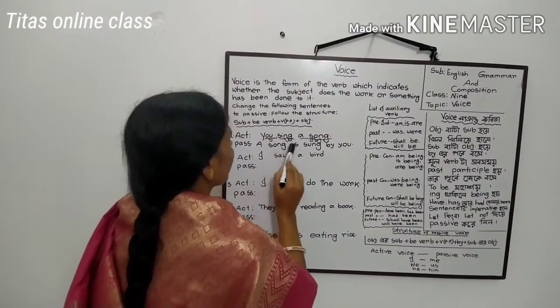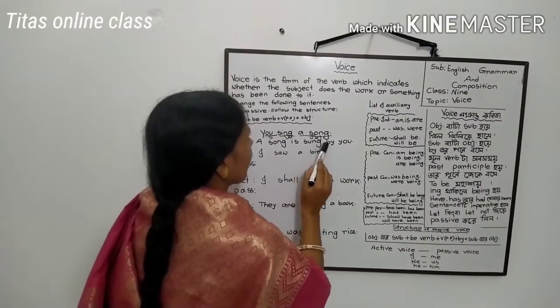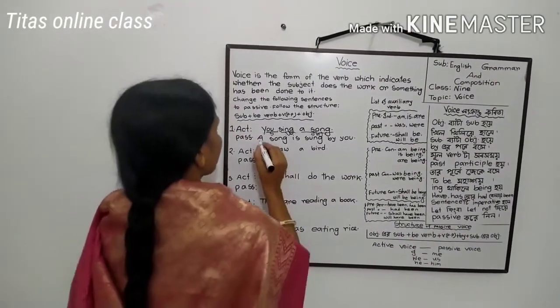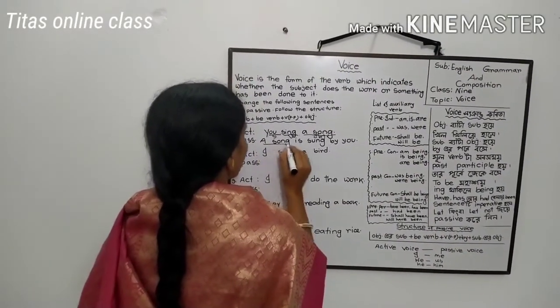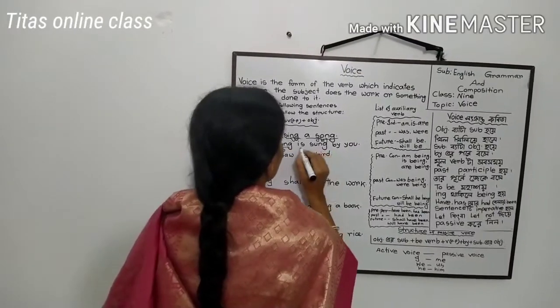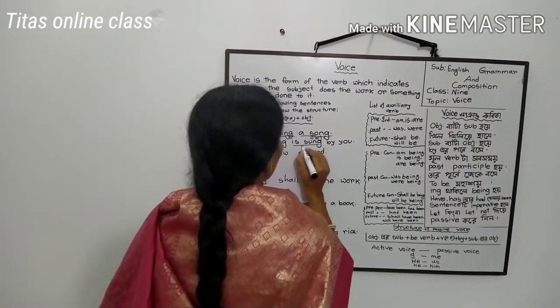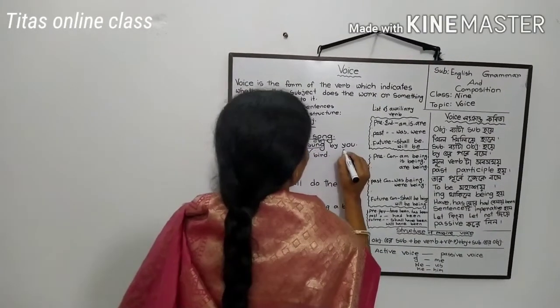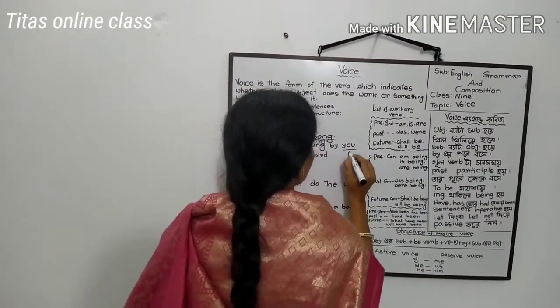Next one: 'A song is sung by you.' Here, 'a song' is subject, 'is sung' is verb, and 'you' is object.